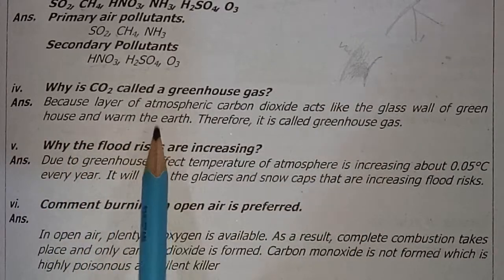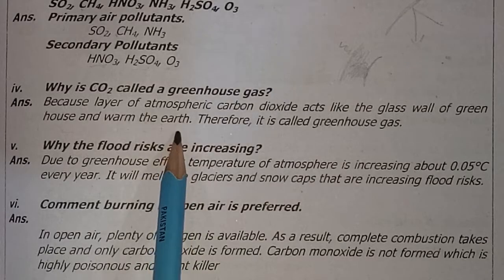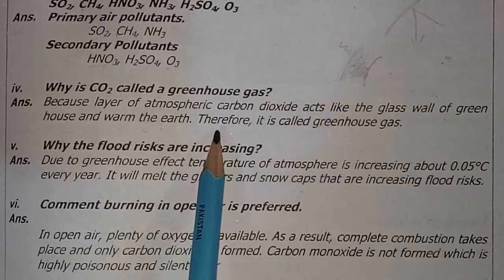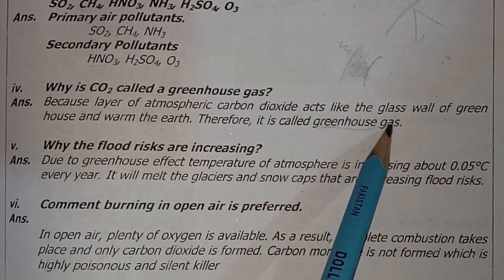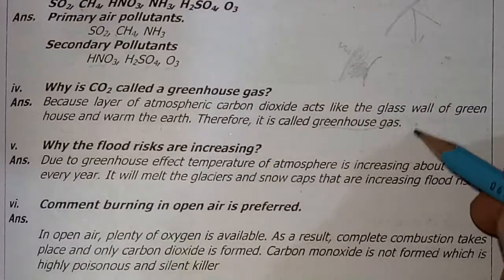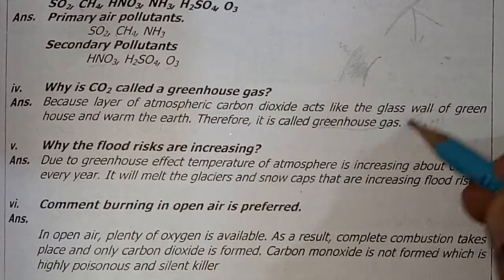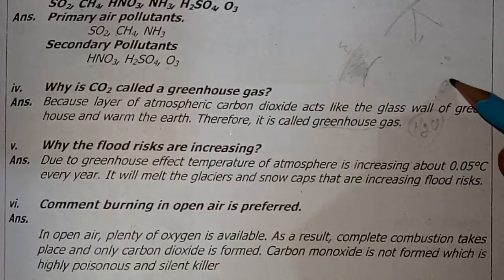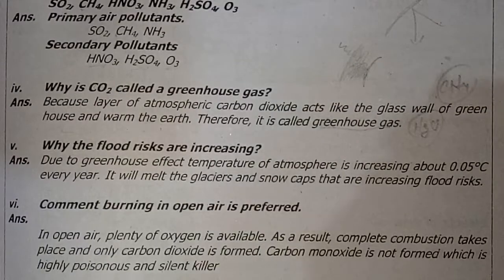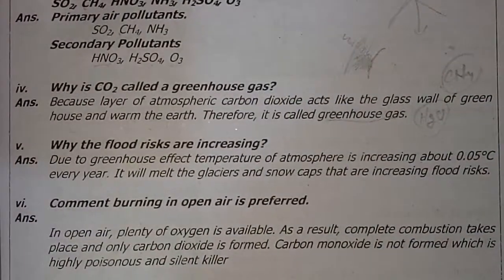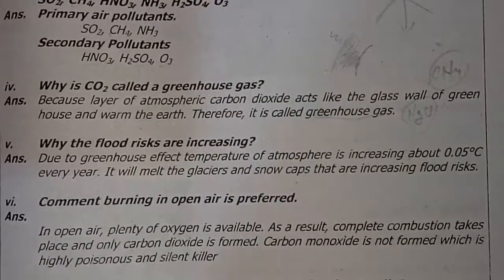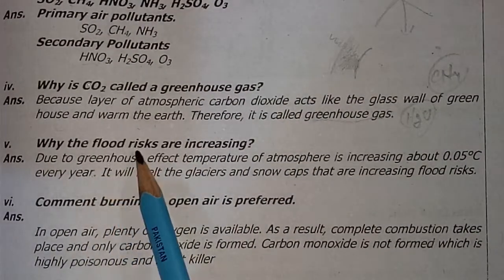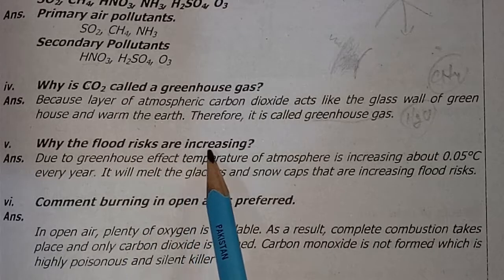As the Earth gets warm, it maintains an elevated temperature — that is why carbon dioxide is called a greenhouse gas. Other greenhouse gases include water vapors, methane, and more. Now let's move to question five: Why are flood risks increasing?